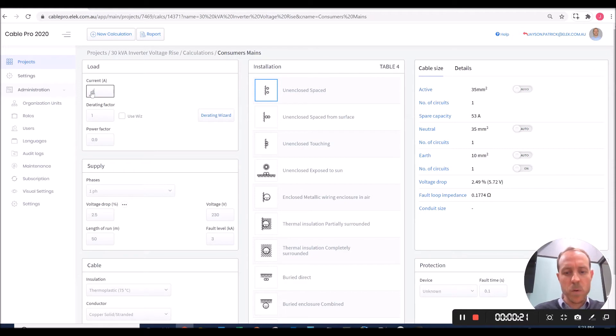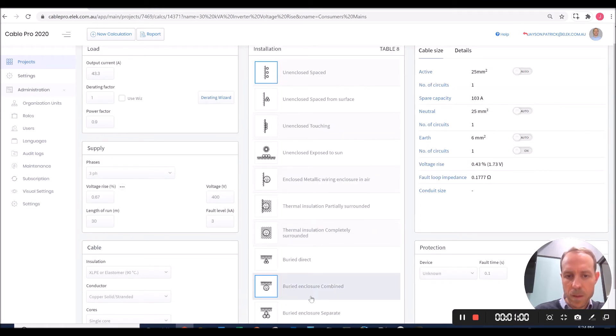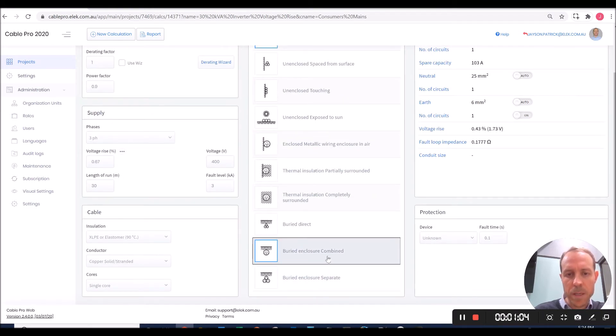The load current was 43.3 amps. I'm going to change voltage drop to voltage rise. It's a three-phase inverter. For the consumer's mains, the voltage rise should not exceed 0.67%. The length of the run is 30 meters. 400 volt system. We're going to use XLP insulated cables, single cores, copper conductors. The installation is going to be buried in a combined enclosure.